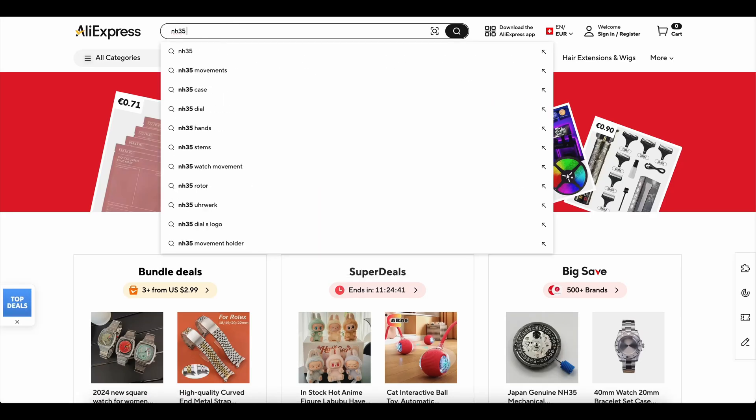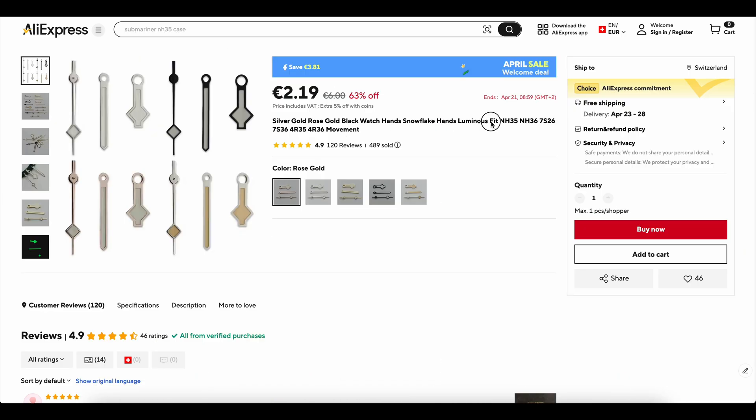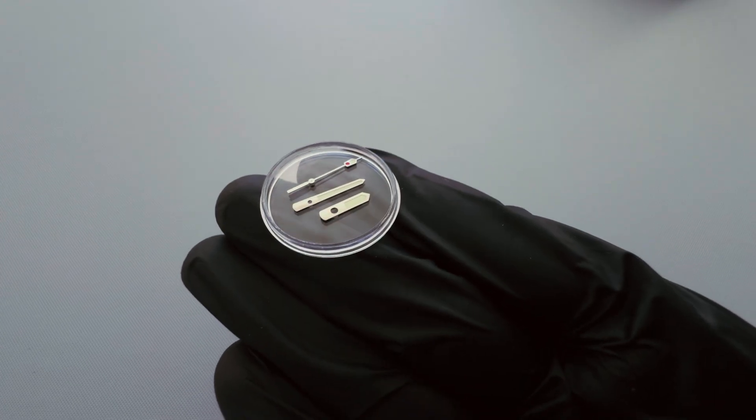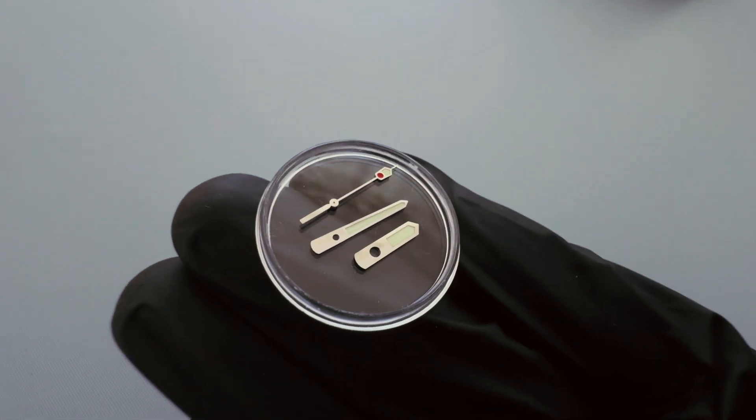Hands is an easy part. Hands just need to be compatible with your movement. For GMT movements, make sure you get four hands, since you'll need the extra one for the second time zone. Make sure the lume color on the case, dial, and hands matches. It's usually either blue or green.